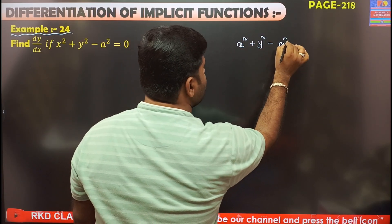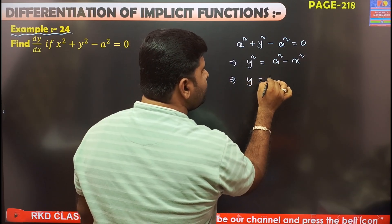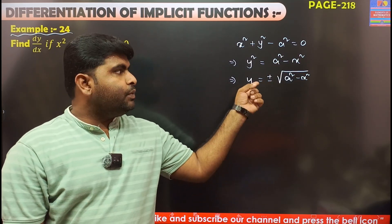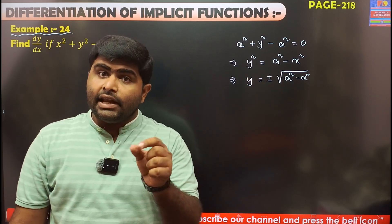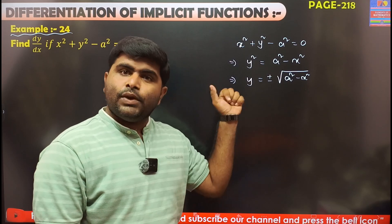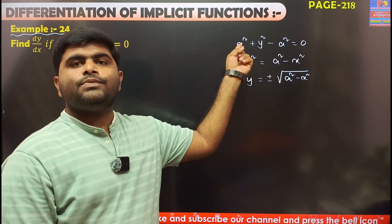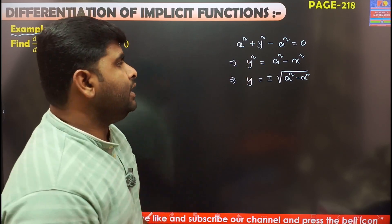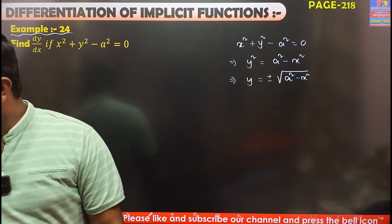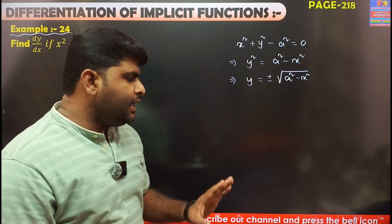x squared plus y squared minus a squared equal to 0, so y squared equals a squared minus x squared. Therefore y equals plus or minus root over a squared minus x squared. So y gives a plus or minus value — it is a single function to convert. This is the equation of a circle, so the equation of a circle is a function, and we will have to work with it.